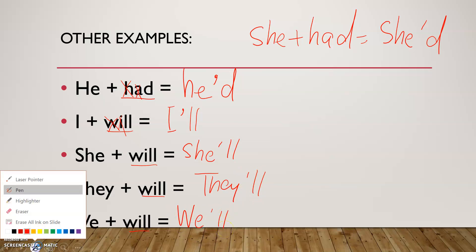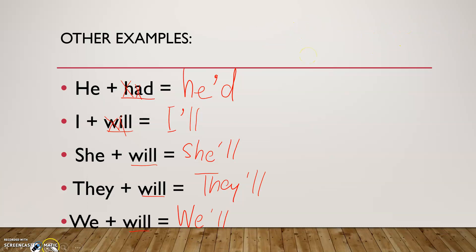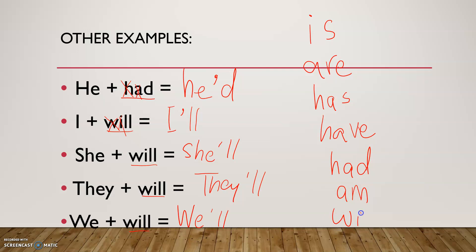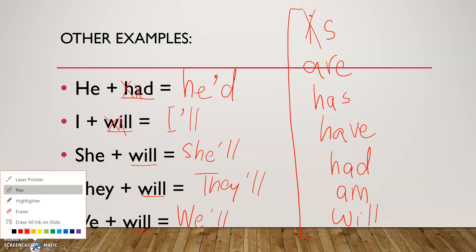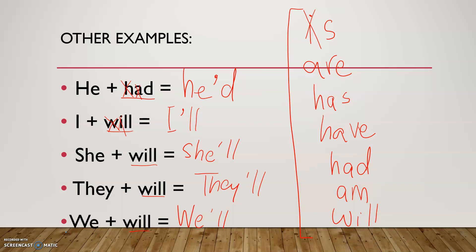Let's revise together — what should we cross from each word? Is: we cross I. Are: we only cross A. Has, have, had: we cross two letters — H and A. Am: we only cross A. Will: we cross W and I, keeping the double L. Pause and think about it, then let's confirm: is → cross I; are → cross A; has/have/had → cross H and A; am → cross A; will → cross W and I.